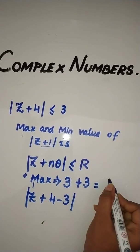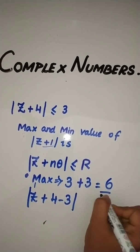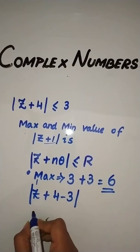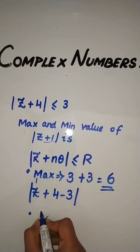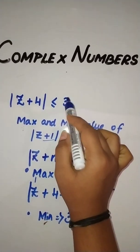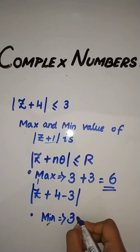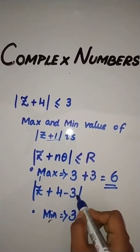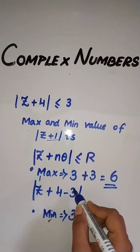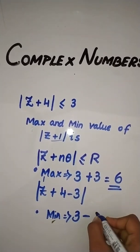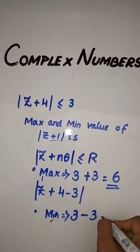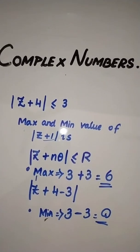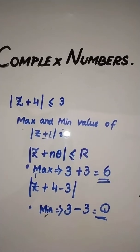The maximum value is 6, and the minimum value is this real number minus whatever number you have taken for the modulus. So the minimum value is 0. This is the trick.